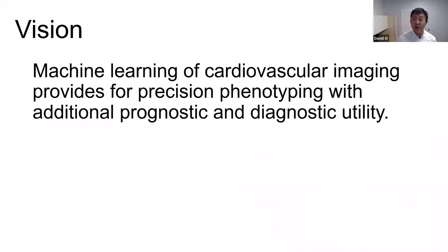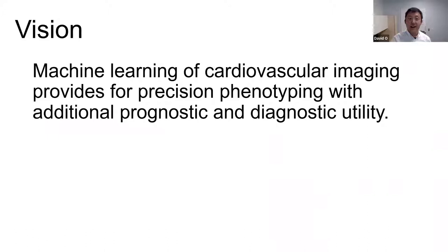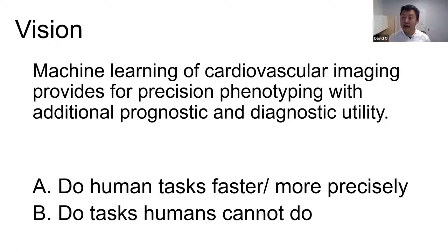The overall thesis is that machine learning of cardiovascular imaging provides additional prognostic and diagnostic utility. I'll focus at the beginning of this talk on ultrasound, and explain why I think that's a really good initial modality. At its base form: can machines do human tasks faster or more precisely than humans? And can machines do tasks that humans can't — can we extract additional information from imaging?